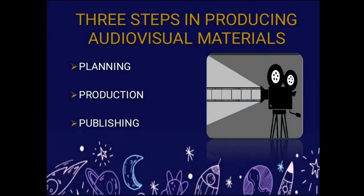Now let's talk about the three steps in producing audio visual materials. First, planning — this is the crucial part because before proceeding to production, you need to figure out, collect ideas, and think about what kind of information is suitable for your purpose. Second is production — the recording stage, the process of combining and making those ideas into educational content. Third is publishing — the final part, making the material available anytime you need to use it.